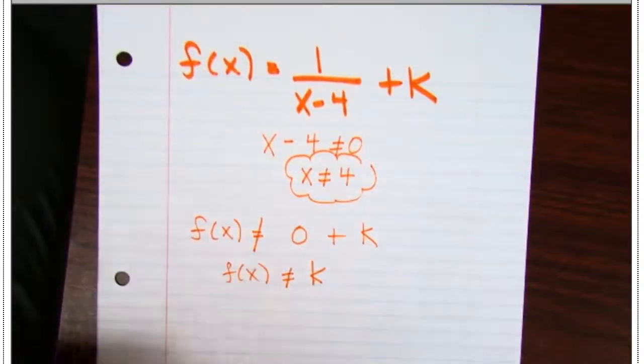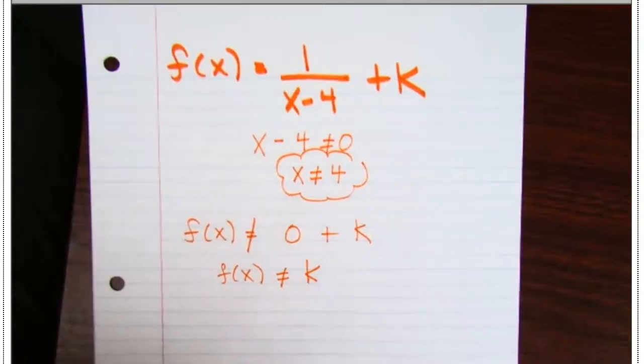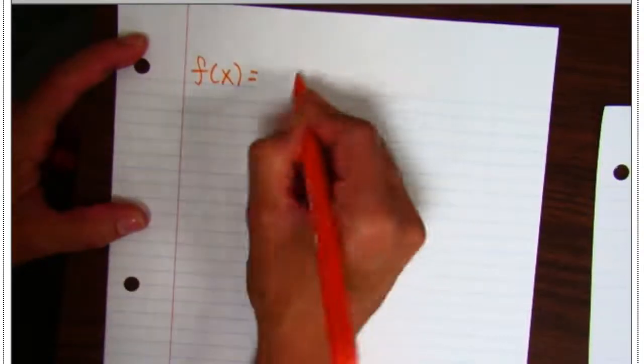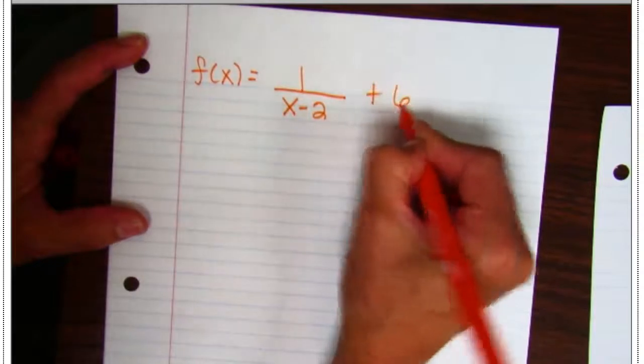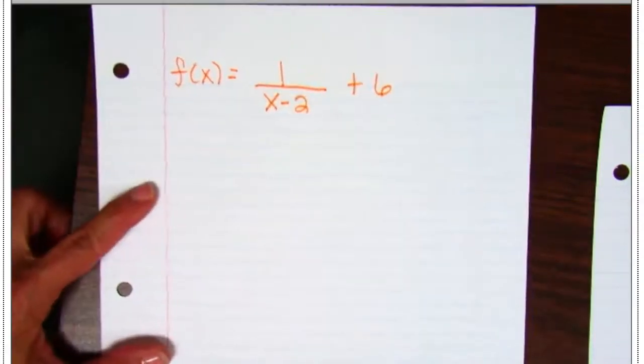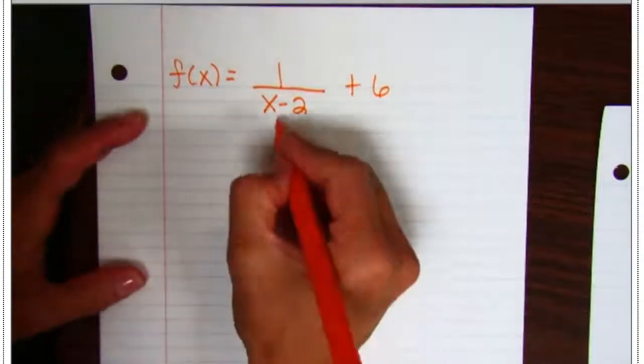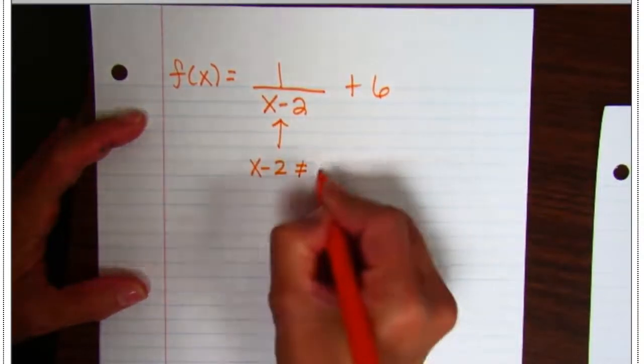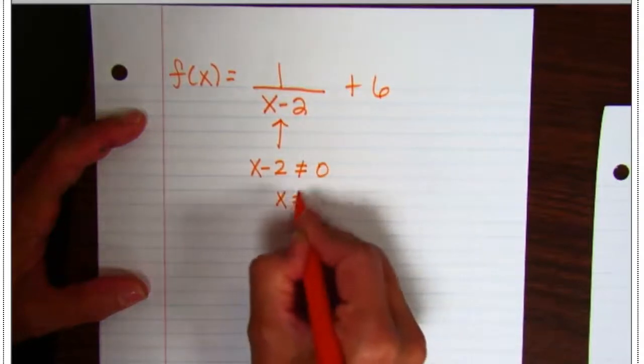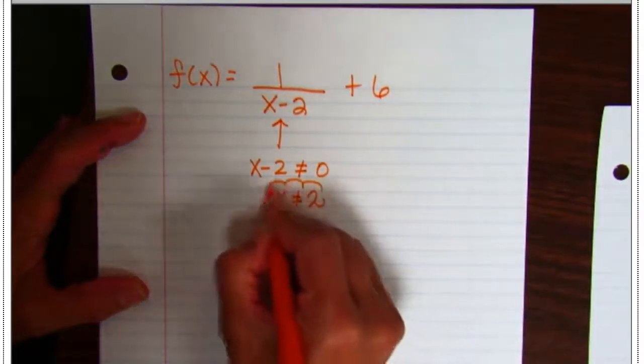then there is no way that f of x is just going to equal whatever the k value is, because this is impossible. So let's take a look at just one more. And let's pretend we have this. Today we're talking about what x and y cannot equal. Tomorrow you're graphing that. So remember, underneath the fraction bar...